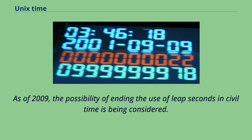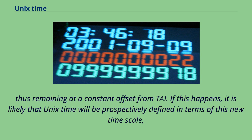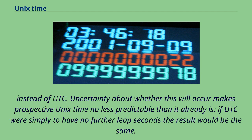As of 2009, the possibility of ending the use of leap seconds in civil time is being considered. A likely means to execute this change is to define a new timescale, called international time, that initially matches UTC but thereafter has no leap seconds, thus remaining at a constant offset from TAI. If this happens, it is likely that Unix time will be respectively defined in terms of this new timescale instead of UTC. Uncertainty about whether this will occur makes prospective Unix time no less predictable than it already is — if UTC were simply to have no further leap seconds, the result would be the same.